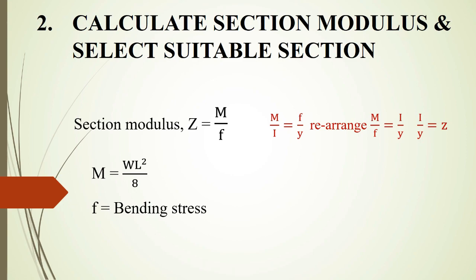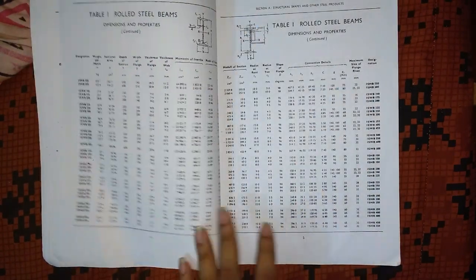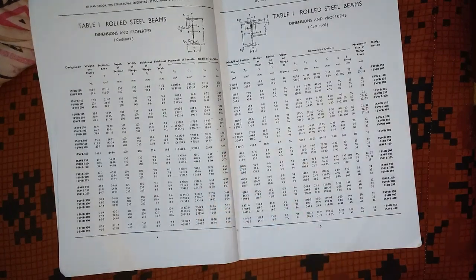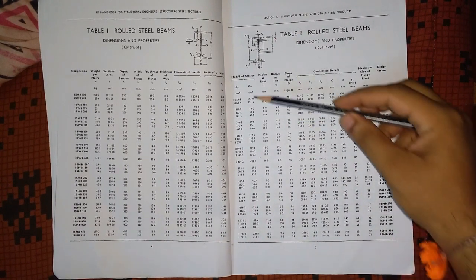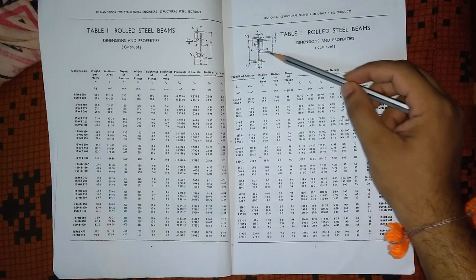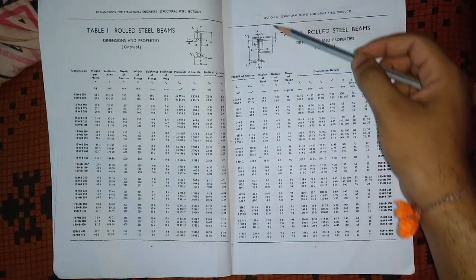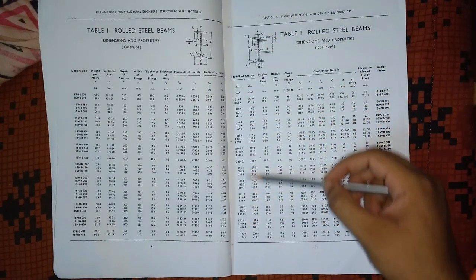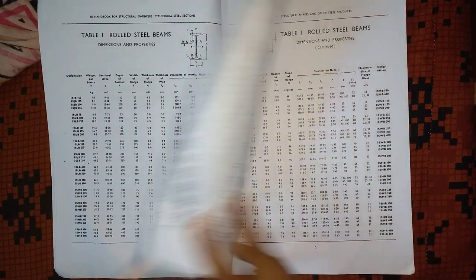Using SP6 — the steel table — we look through its pages and find sections where the ZXX value is just above our calculated Z. We select the section whose ZXX (the section modulus about the X-X axis) meets or exceeds our required value. The selected section number is identified accordingly.